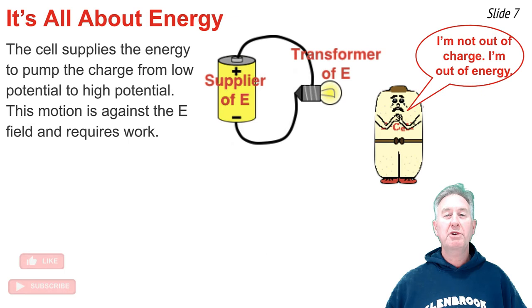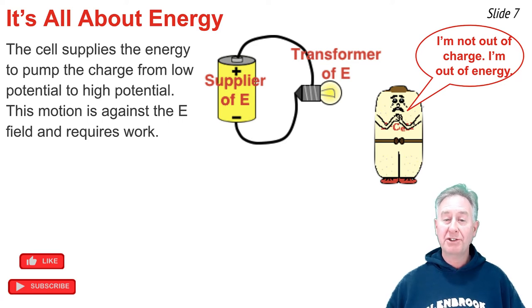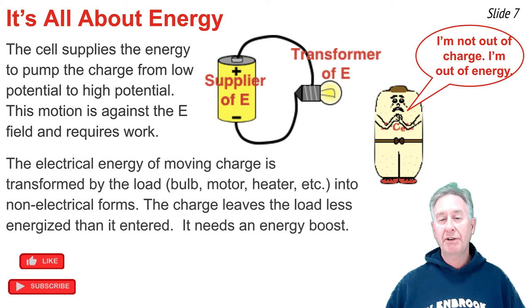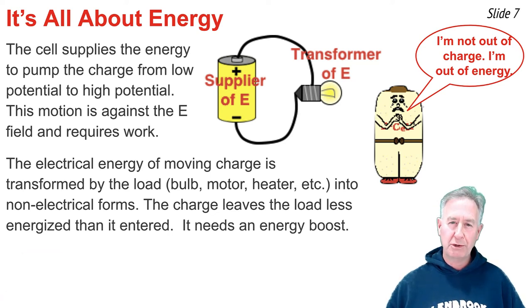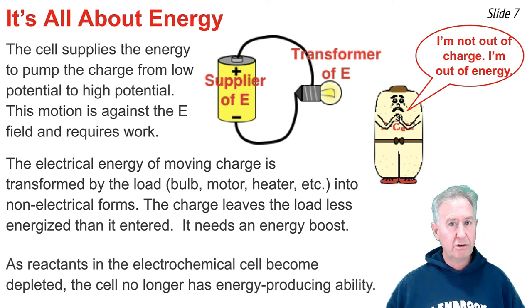The electrochemical cell supplies the energy that is required to pump the charge from the low-potential terminal to the high-potential terminal. This movement is a movement against the electric field and, as such, requires work and energy. This is called energy in. Then the charge that drifts through the circuit eventually reaches the load, where that electrical energy is transformed to other forms of energy by the load. If the load is a light bulb, then the energy per coulomb of the charge that is exiting the light bulb is less than what entered the light bulb, and that charge needs an energy boost. The energy boost is supplied by the electrochemical cell.